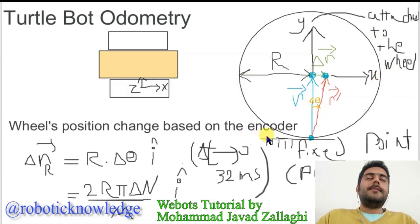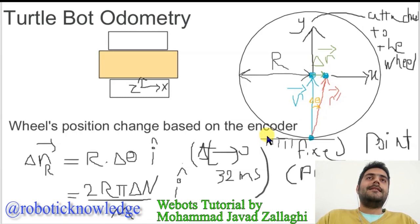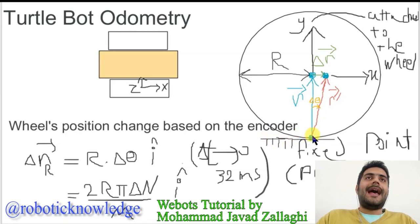Here is the ground. The main assumption here and in this kind of problem is that we have no slip. So we have a pure rotation when the mobile robot is moving at the contact point.